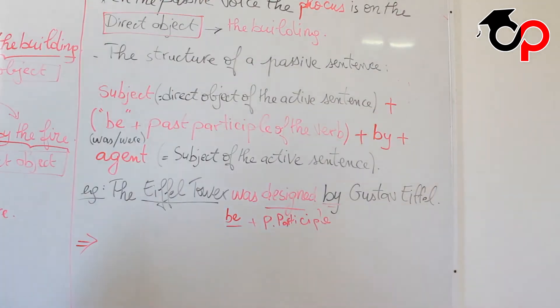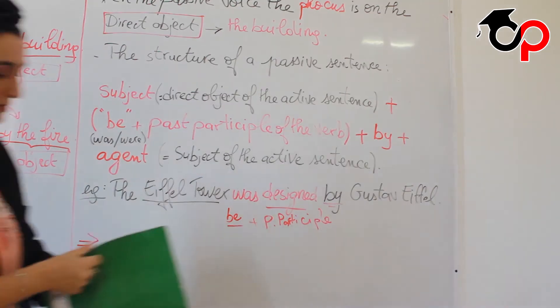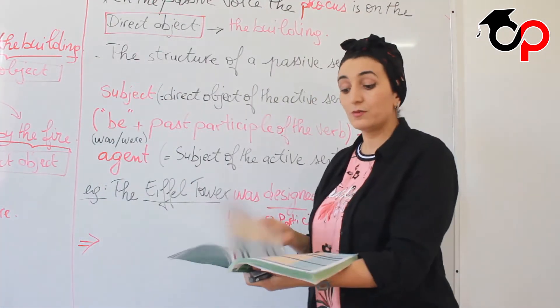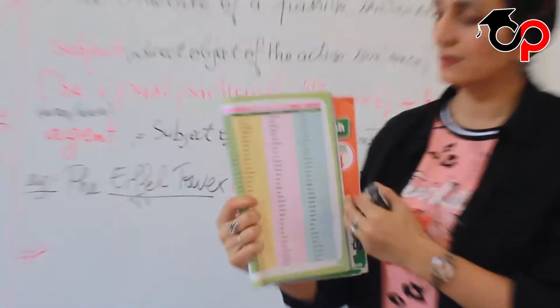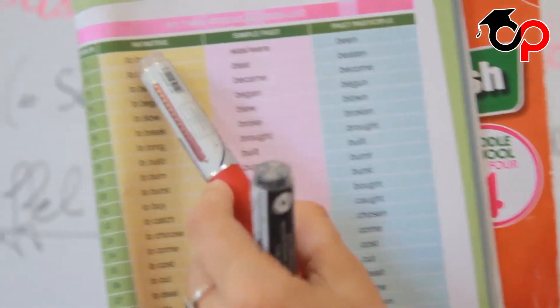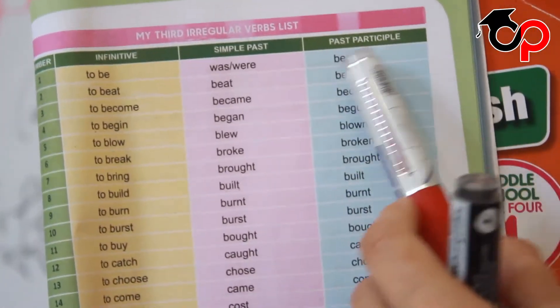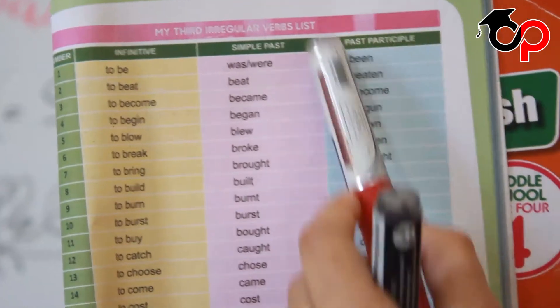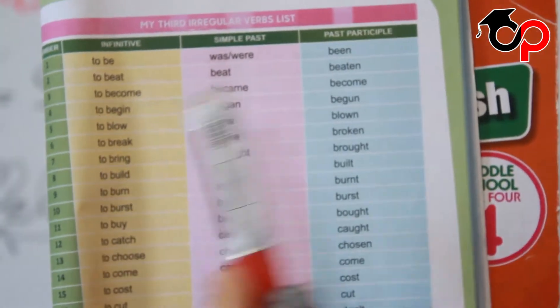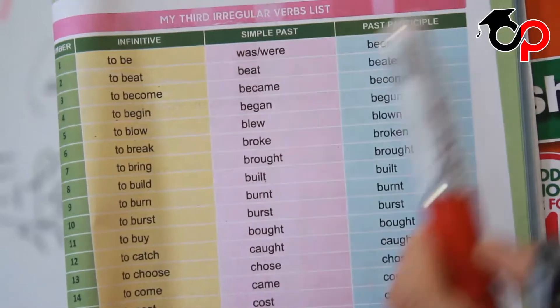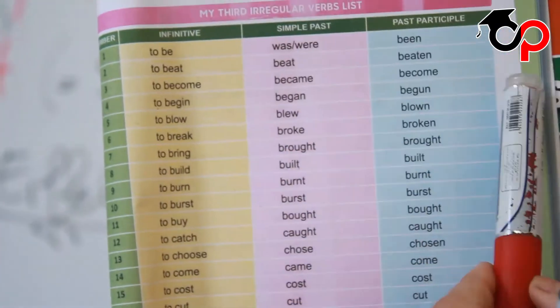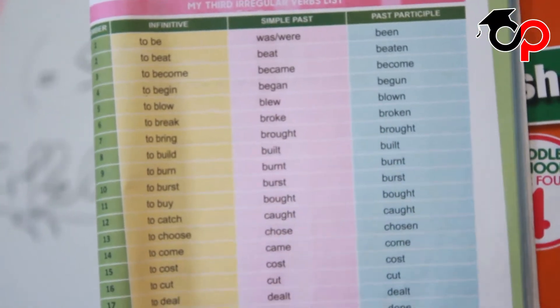When you look at the end of your book, you have a list of irregular verbs. You have the first form, which is the infinitive — the first form of the verb. The second form of the verb is the simple past. Then you have the third form, which is known as the past participle. For irregular verbs, it's different — each verb has a unique form in the past and in the past participle. Sometimes it's the same, but sometimes it's completely different.